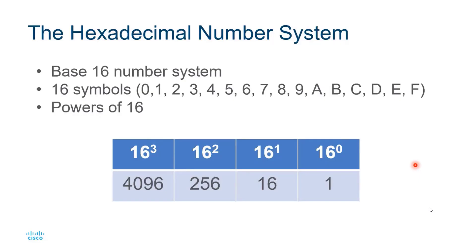Hexadecimal, or hex for short, is a base 16 number system. It uses 16 symbols, the numbers 0 to 9, as well as the letters A to F. It is based on powers of 16.